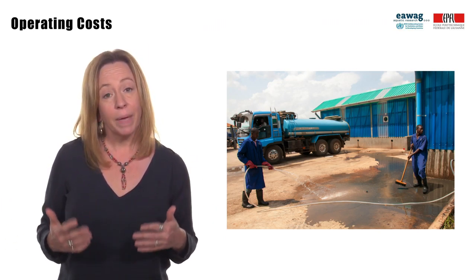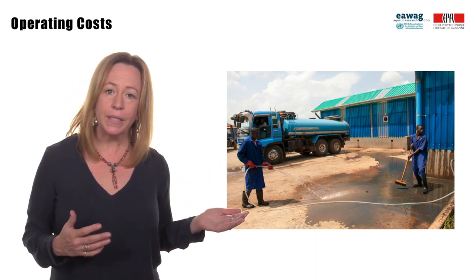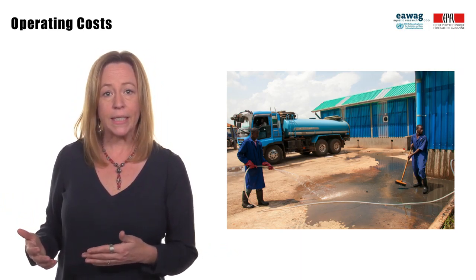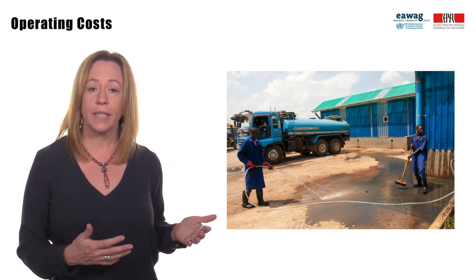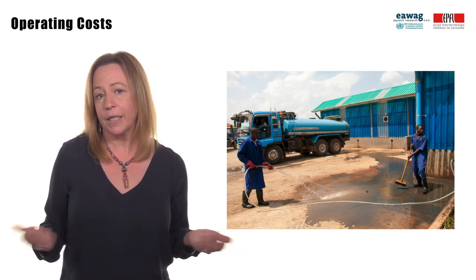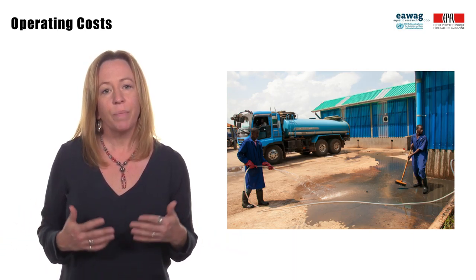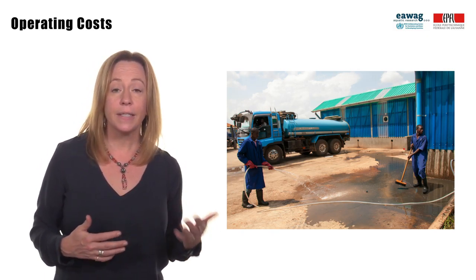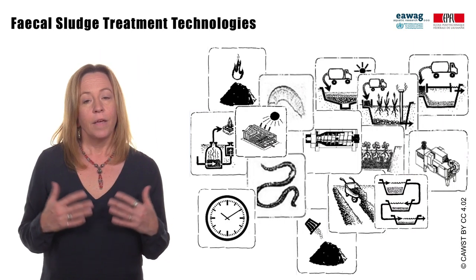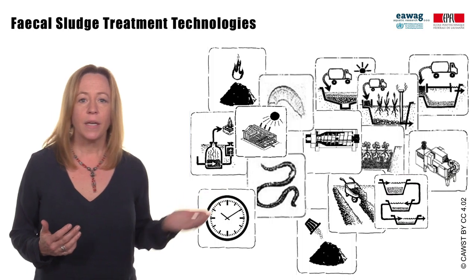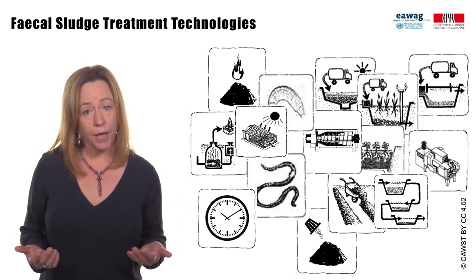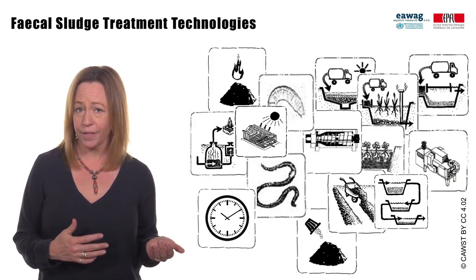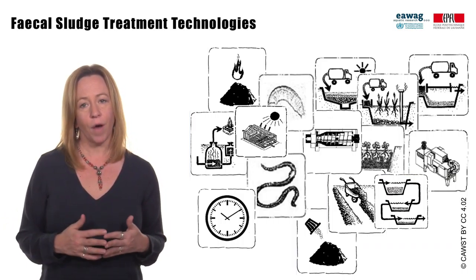Operating costs are the expenses which are related to the operation of a business, equipment, or treatment facility. With fecal sludge management, this could be collection and transport businesses, vacuum trucks, treatment facilities, or the operations budget of a utility — it is the cost of resources just to maintain their existence. Net operating costs can be offset by revenues, such as the sale of treatment end products. Fecal sludge treatment technologies will all have very different capital costs, but also different operating costs based on the complexity of operation.